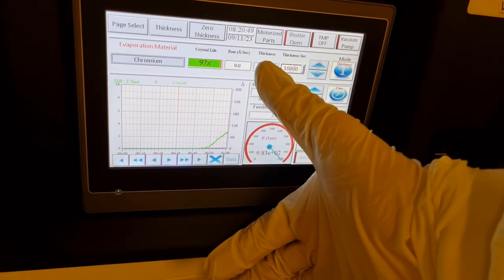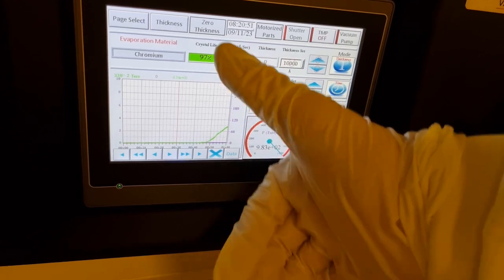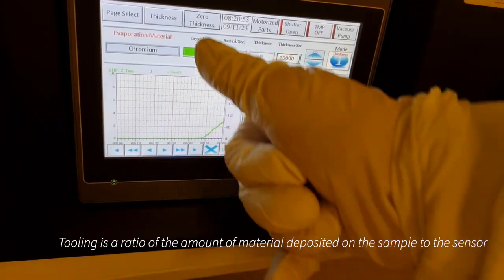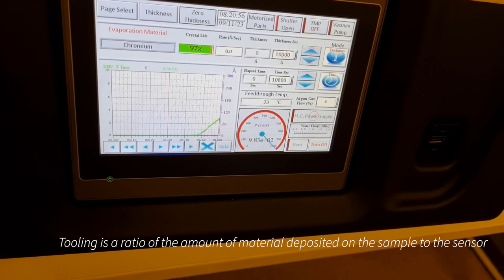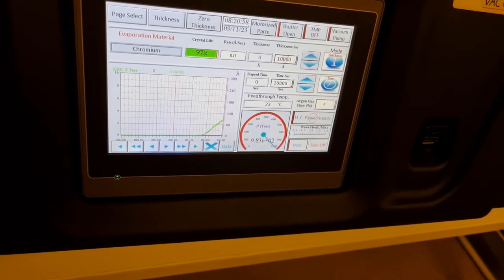That tooling factor is currently set to 1. It probably should be something like 3, 4, or 5. But again, that needs calibration and it depends on how you set things up. After setting the material, usually we'll zero the thickness. And then we're just about ready to start.